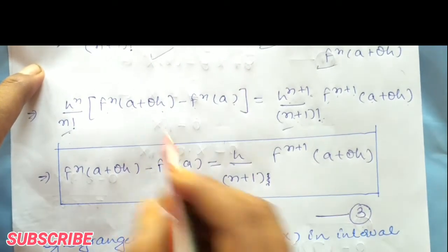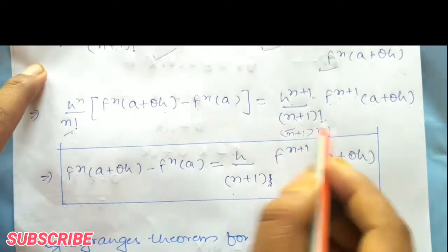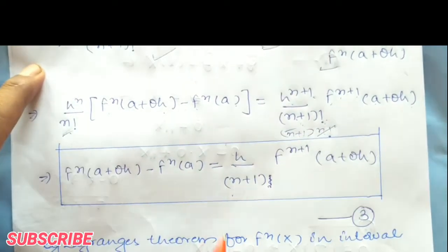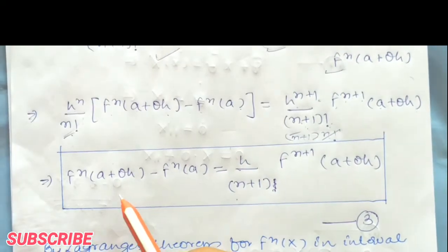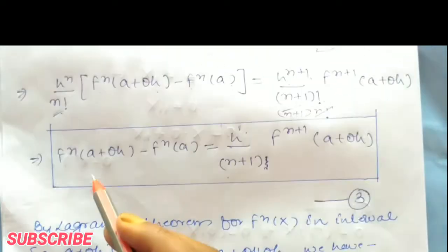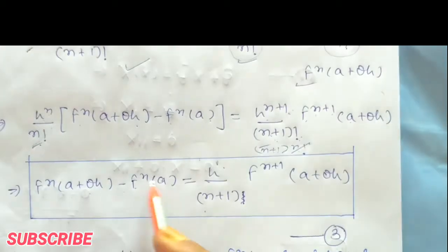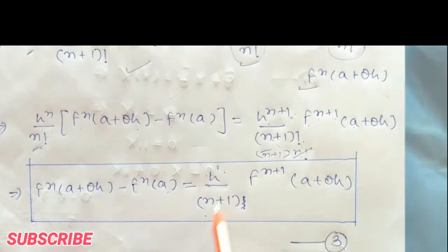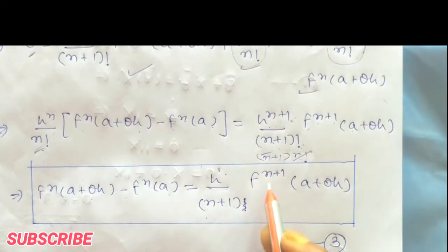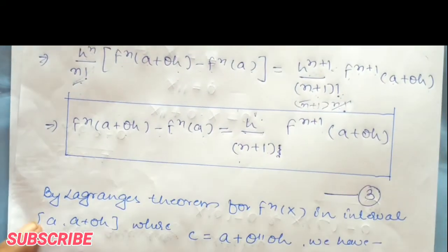Here the factorial and n+1 factor can be considered. After cancellation, asking about n or n+1: the terms cancel and we get f^n(a + θh) − f^n(a) = h/(n+1) · f^(n+1)(a + θ'h). We call this equation 3.